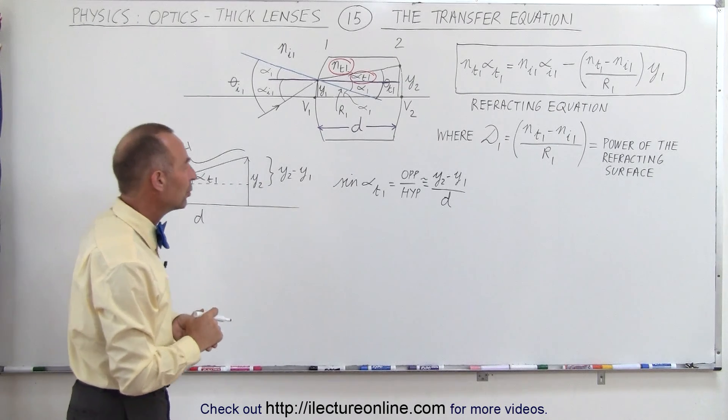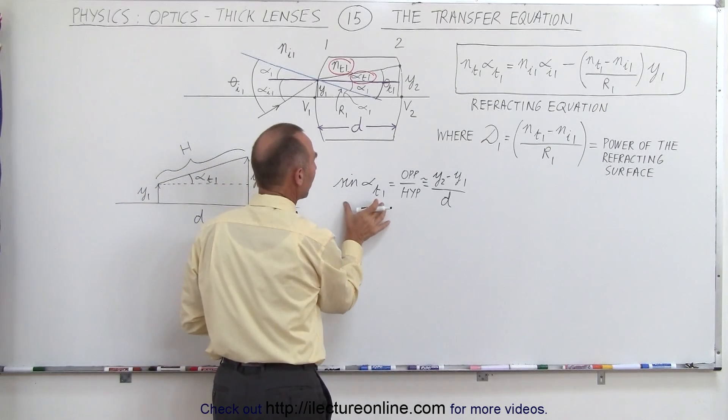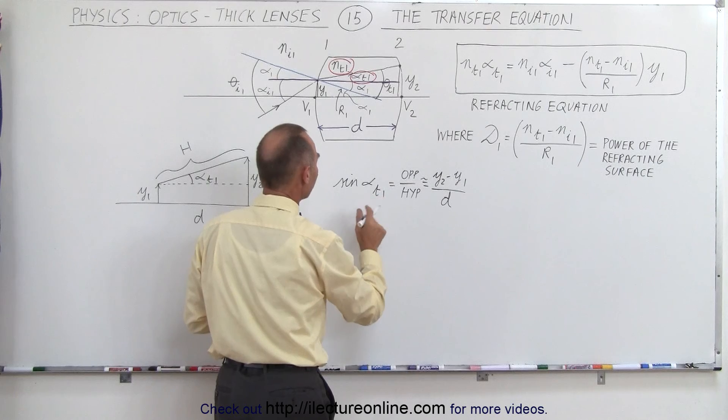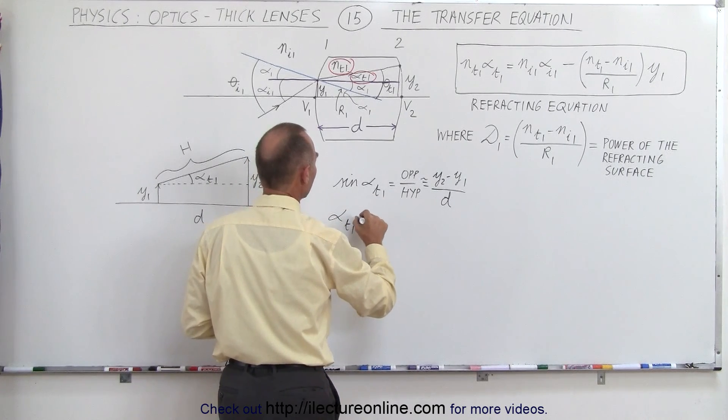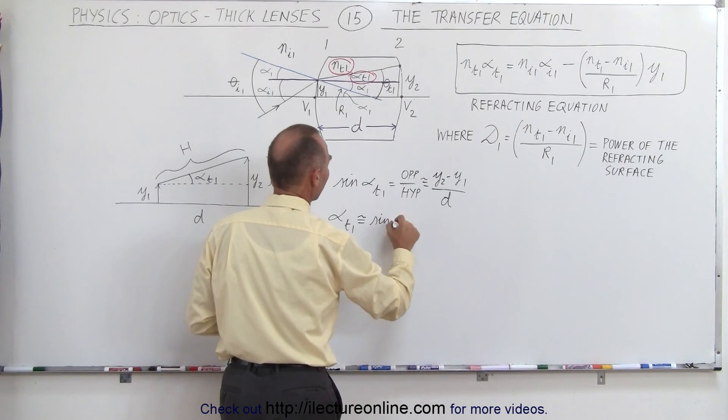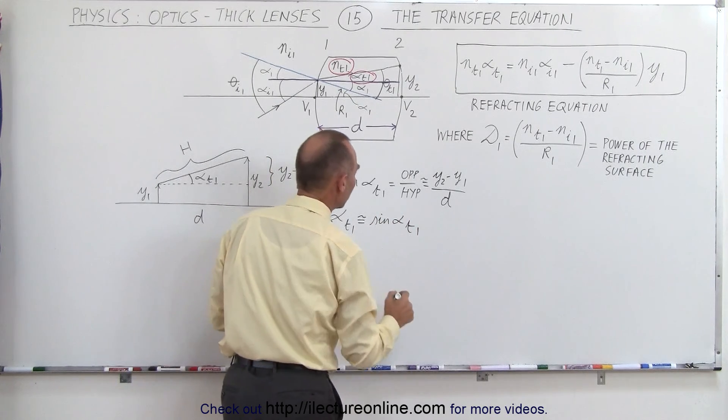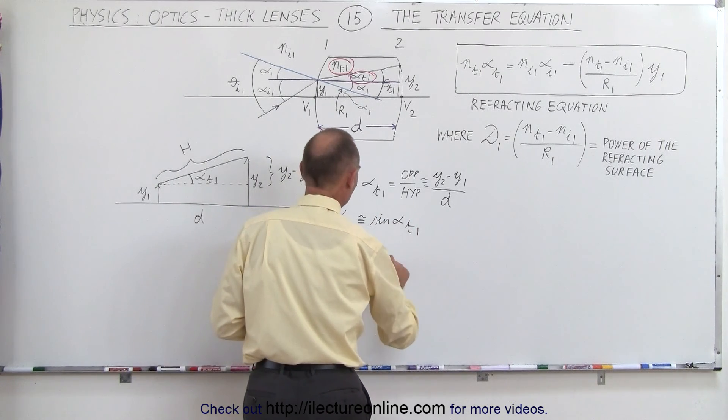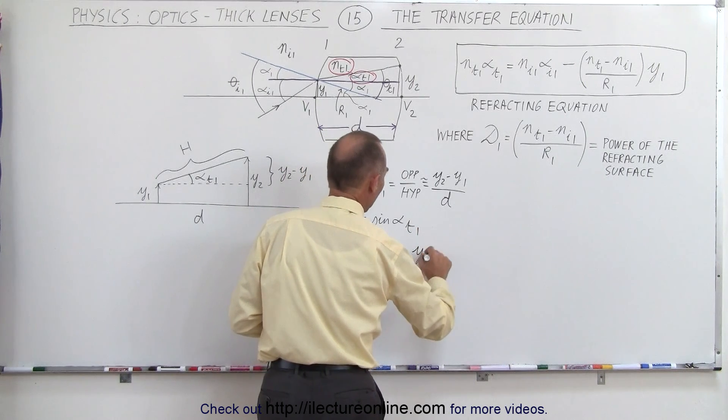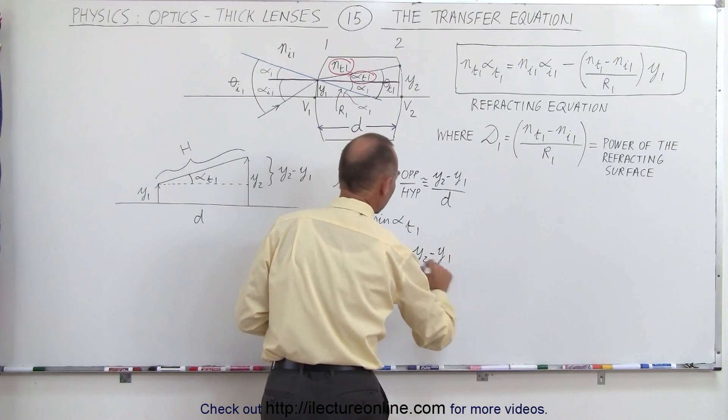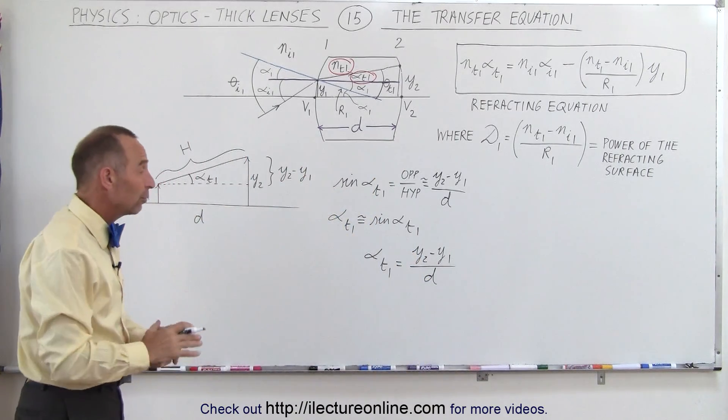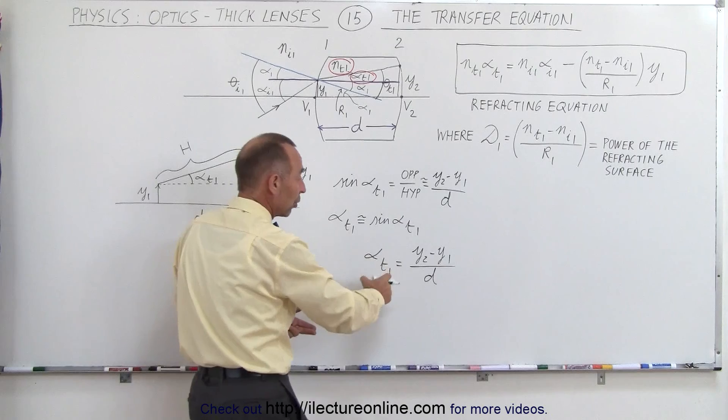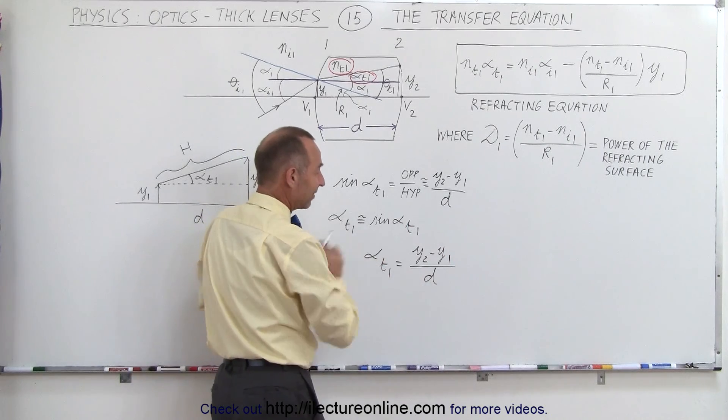And of course, we know that the sine of alpha t1 is approximately equal to alpha. So we can say that alpha t1 is approximately equal to the sine of alpha t1, which means that we can write alpha t1 is equal to y2 minus y1 divided by d. Now what we want to do is we want to write y2 in terms of y1. So we want to isolate that.